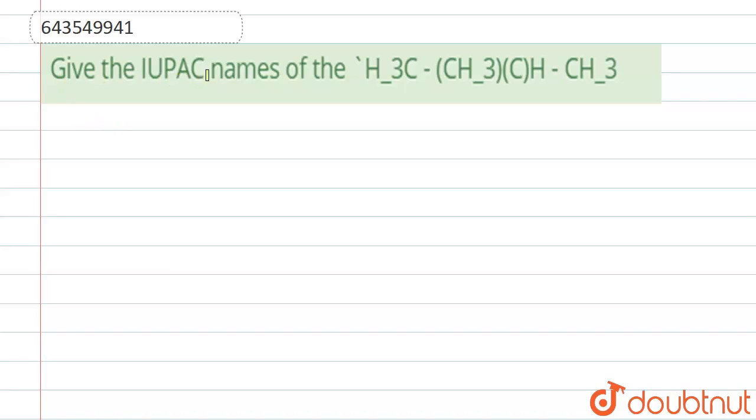Hello everyone, here the question is: Give the IUPAC name of the structure CH3-3C-(CH3)C(OH)-CH3.